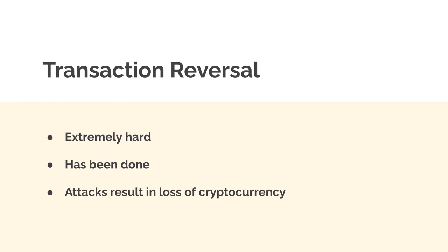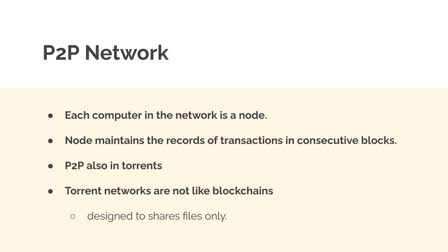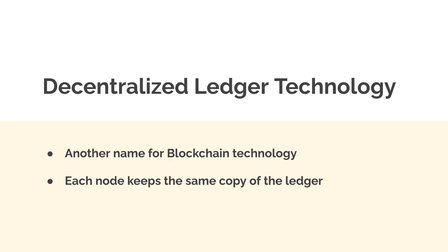Transaction reversal is very hard, although it has been done rarely in attacks that result in a loss of cryptocurrency. A person-to-person network is one where each computer is a node, and a node maintains records of transactions in consecutive blocks. This structure is also seen in torrents, but torrent networks are designed only to share files. A decentralized ledger is another name for a blockchain because each node keeps the same copy of the ledger, so the network is decentralized with no central entity.